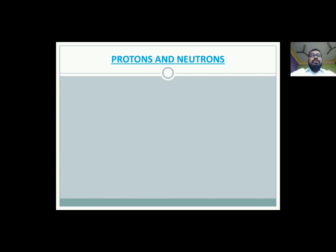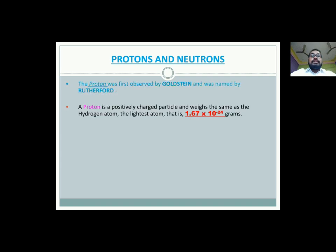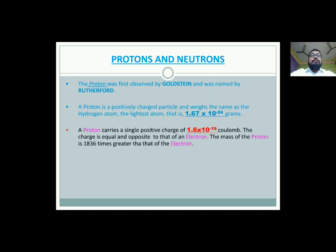Then, we have the protons and neutrons. Protons was first observed by Goldstein and was named by Rutherford, which is a positively charged particle and weighs the same as the hydrogen atom, the lightest atom, that is 1.67 into 10 to the power minus 24 grams. Don't forget to put the minus sign in front of 24. Next, we have a proton carries a single positive charge of 1.6 into 10 to the power minus 19 coulomb. The charge is equal and opposite to that of an electron. The mass of the proton is 1836 times greater than that of the electron.